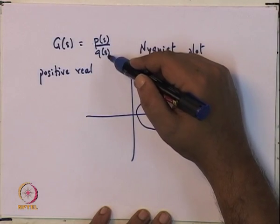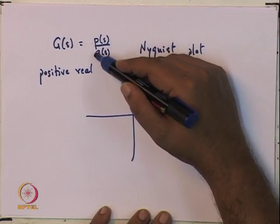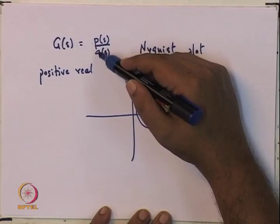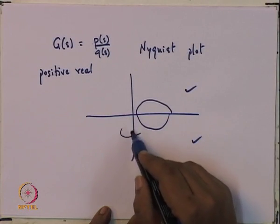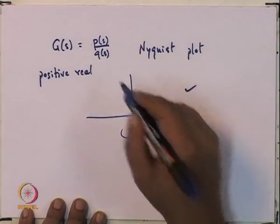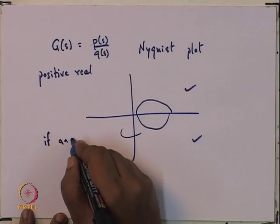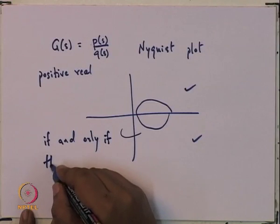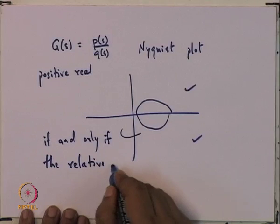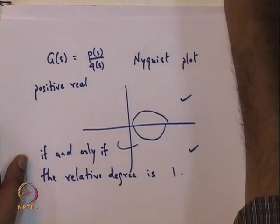The reason for that is if the relative degree is more than 1 — for example, if the denominator is 2 degrees higher than the numerator — then the Nyquist plot would enter the left-half quadrant. So one observation for the single input single output case is that the Nyquist plot is restricted to the right half of the complex plane if and only if the relative degree is 1. Even if the relative degree is 1, we are still not guaranteed what we want as far as the positive real lemma is concerned.